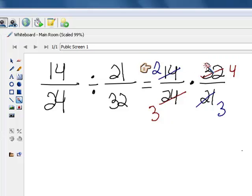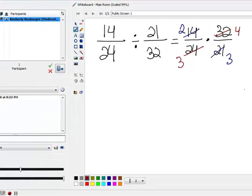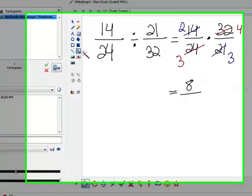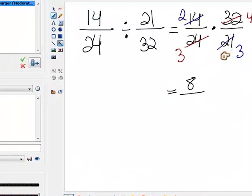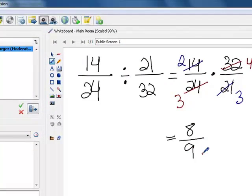So we're going to multiply straight across. 2 times 4 gives us 8 in the numerator, and 3 times 3 gives us 9 in the denominator. And that's as far as we can go with this particular problem.